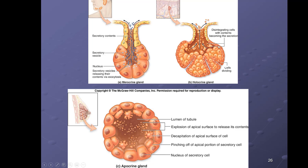Holocrine glands secrete substances after the cell dies. Basically, the cells in the secretory portion fill with whatever is going to be secreted and then they disintegrate. When the cells break down they release their substance into the duct. A great example of holocrine glands is the oil glands in the skin — so holocrine: the cell dies and releases the substance.